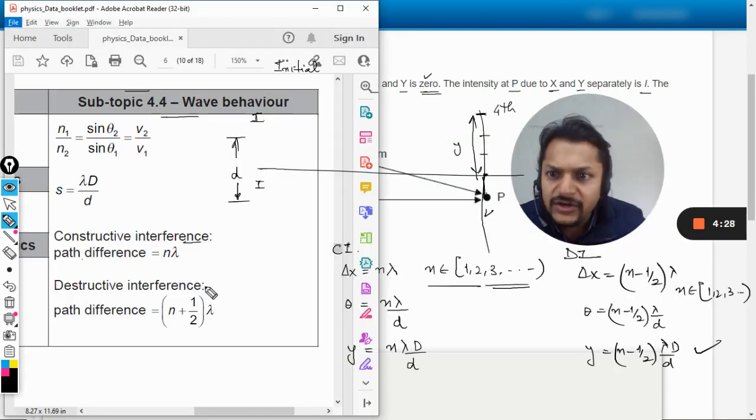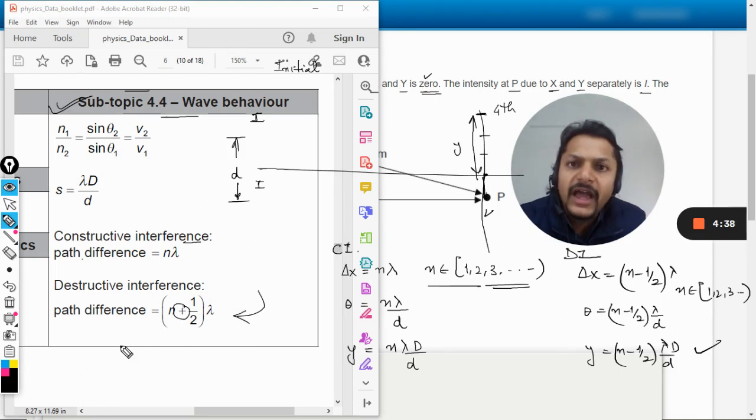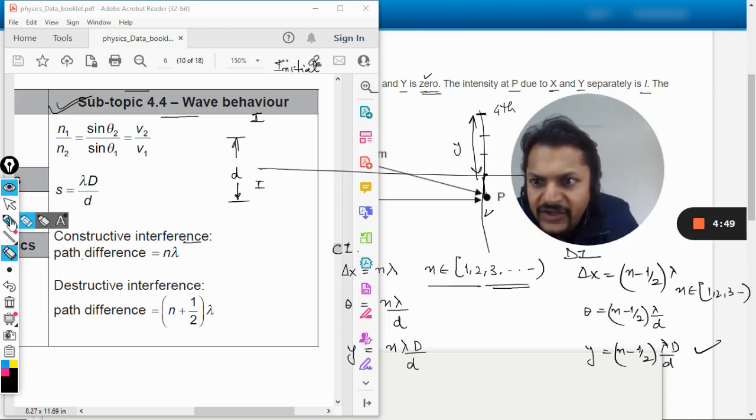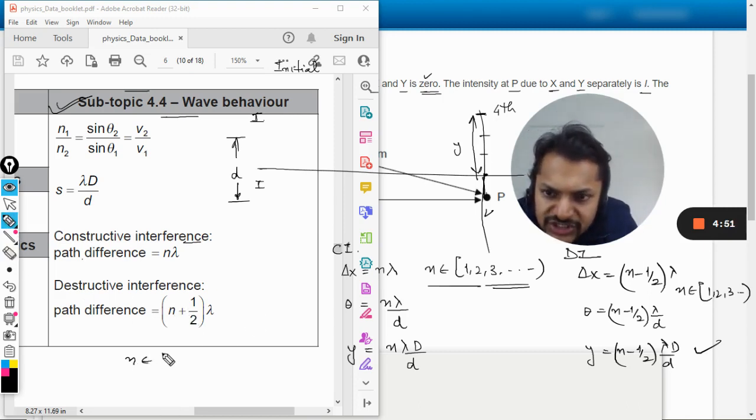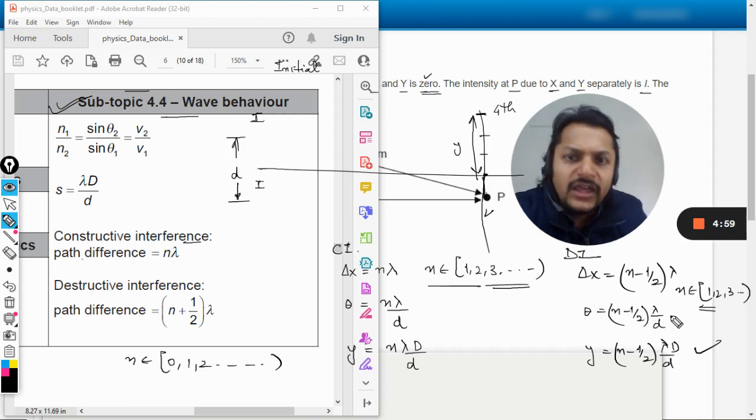I've opened the data booklet. You see for topic 4.4 they are using this formula and there is a plus here, n plus half. Now what is the problem? I'm writing n minus half. So why am I bringing this variation in the formula? I'm bringing this variation because when you have n plus half here, the n should start with 0, and here we would be starting only with 1.